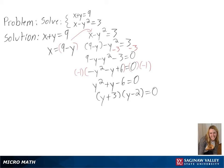We are left with y = -3 or y = 2. Then we can plug these back into our equations to solve for x. When y = -3, we get x = 12. And when y = 2, x = 7.